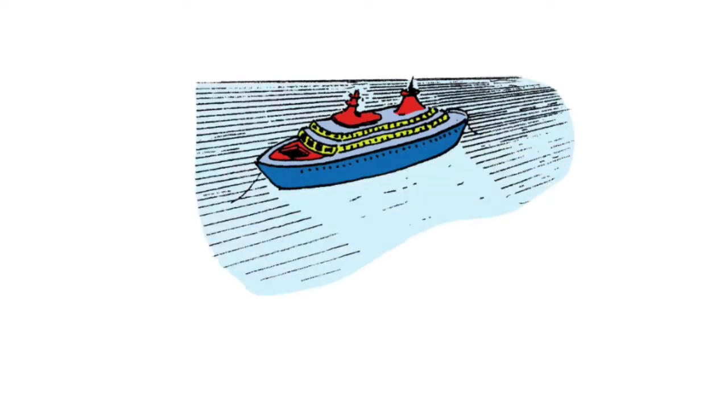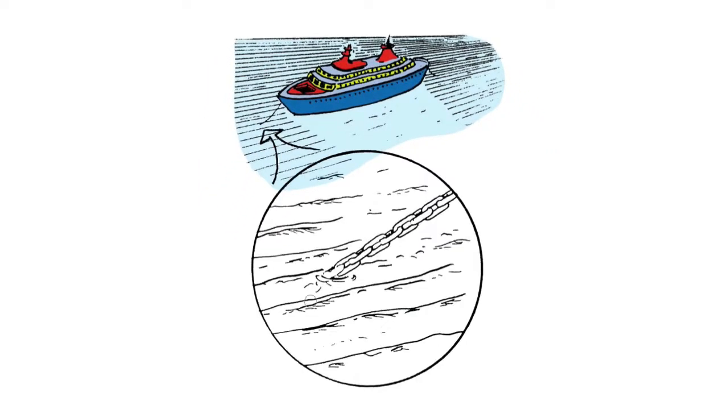This anchored boat is large enough that it can block the passing waves. But what of the chain? Note how the chain is smaller than the distance between the wave crests. As a result, the waves pass right by.